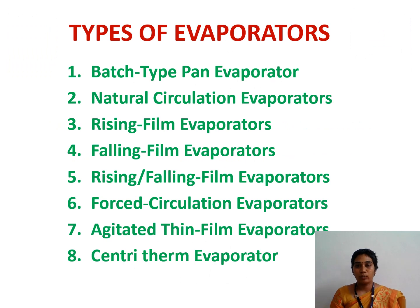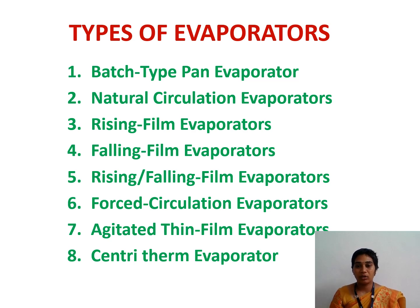There are so many types of evaporators. An evaporator is an application of heat and mass transfer where both heat transfer and mass transfer will be taking place. The types of evaporators include: batch type pan evaporator, natural circulation evaporator, rising film evaporator, falling film evaporator, rising or falling film evaporator, forced circulation evaporator, agitated film evaporators, and centriderm evaporators. We are going to see a few.